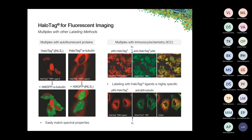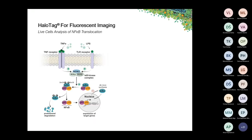Here's another example with the P65-HaloTag fusion stained with the HaloTag TMR ligand, and upon fixation we stained the cytoskeleton with an anti-beta-3-tubulin antibody. Besides analysis of fixed cells, HaloTag can also be applied for live cell imaging, allowing you to look at dynamic processes within cells such as the translocation of proteins. In this example, we looked at the translocation of the transcription factor NF-κB from the cytosol to the nucleus when cells were stimulated with TNF-alpha.